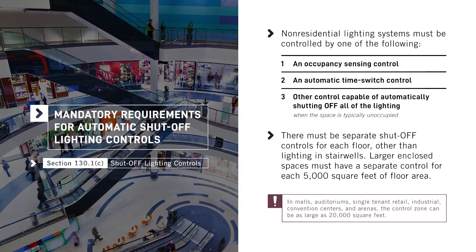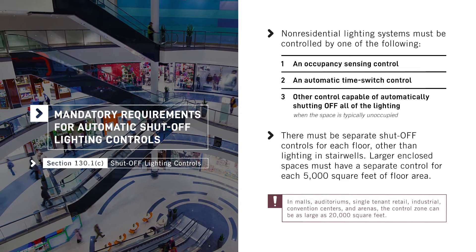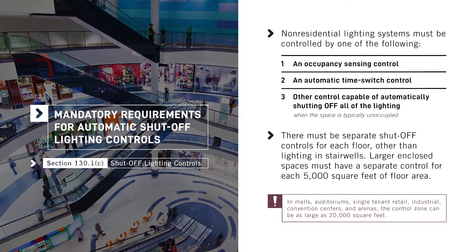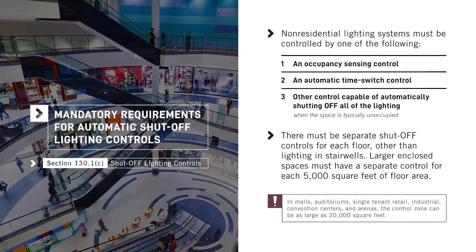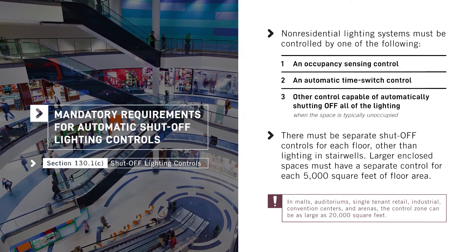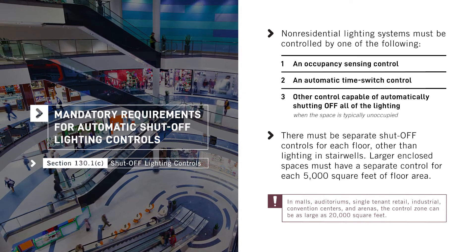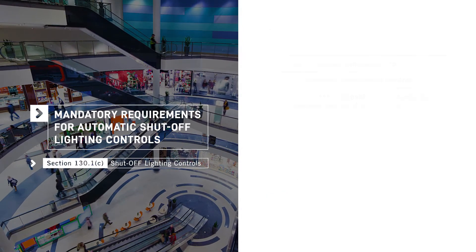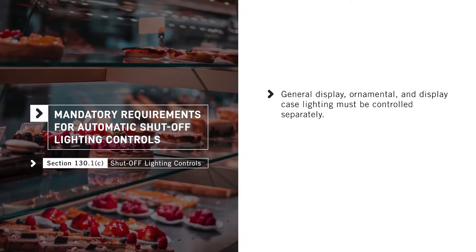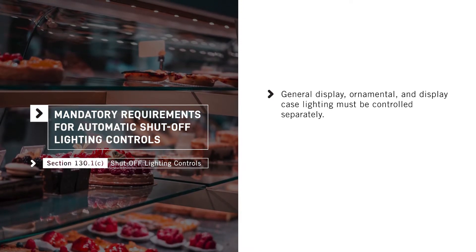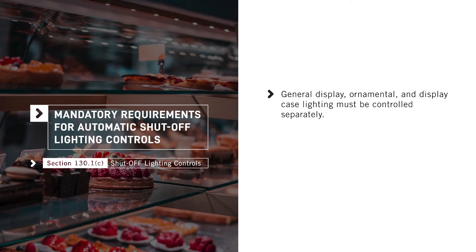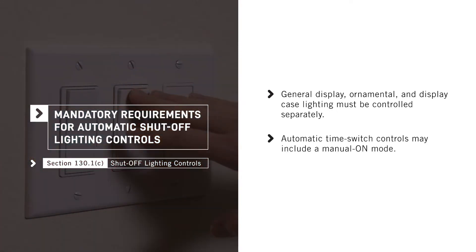However, in malls, auditoriums, single-tenant retail, industrial, convention centers, and arenas, the control zone can be as large as 20,000 square feet. General display, ornamental, and display case lighting must be controlled separately, and automatic time switch controls may include a manual on mode.